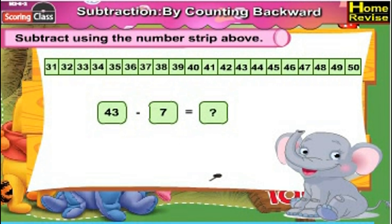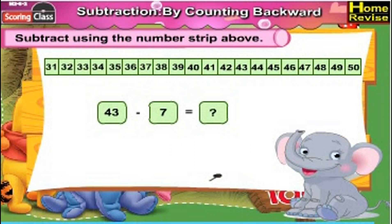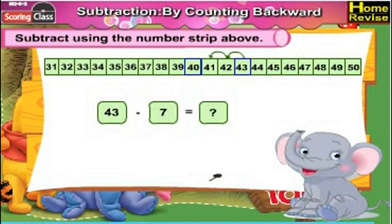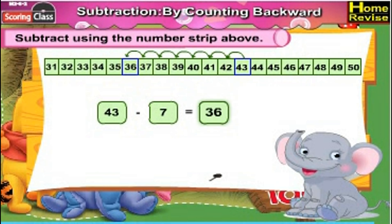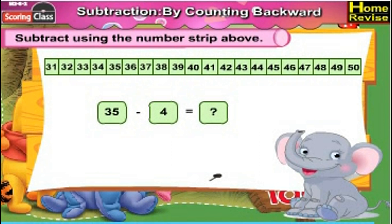43 minus 7 — can you guess what the answer could be? In order to find 43 minus 7, we need to subtract 7 from 43. Subtracting 7 means going seven places back. That means the answer is 36. So 43 minus 7 is 36.